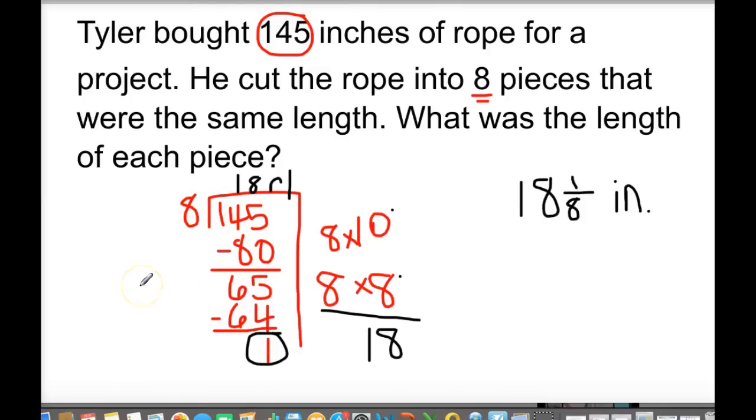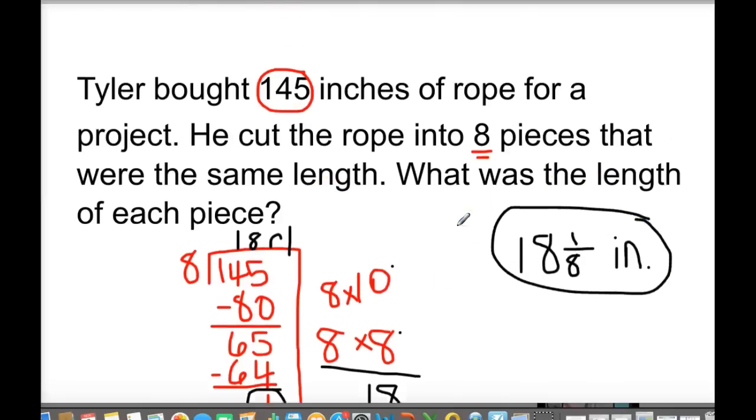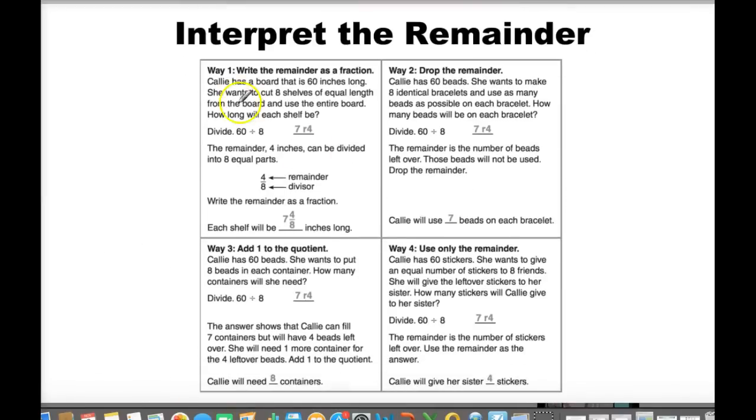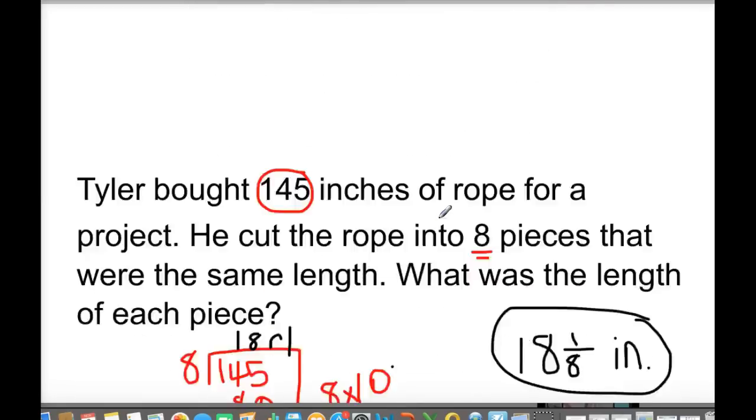So, we'll be practicing that in class tomorrow as well. But just know the numerator will be your remainder, and the denominator, or the bottom number here, is going to be your divisor, 8. So, does that make sense? 18 and 1 eighth inches. That is how long each piece is. So, that's my answer. So, for this way, this time, I used way 1, because way 1 was write the remainder as a fraction. I wrote my answer as a fraction, so I know that that's what I did.